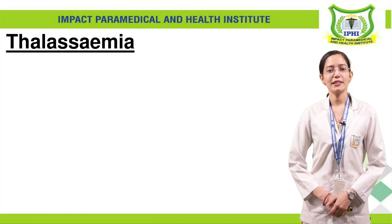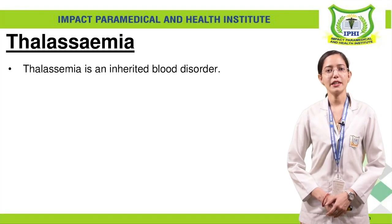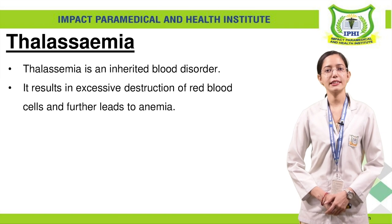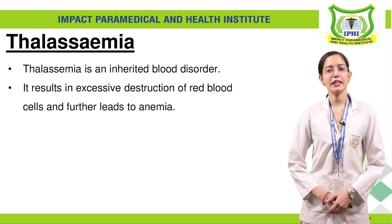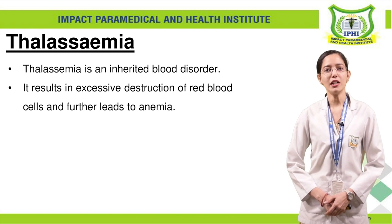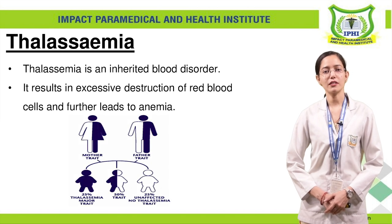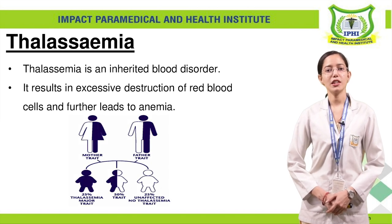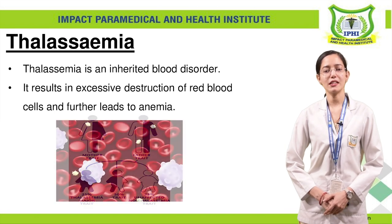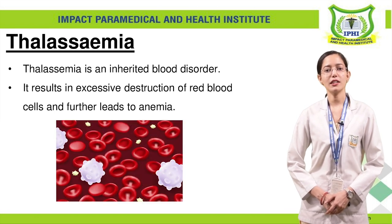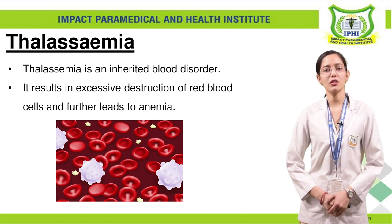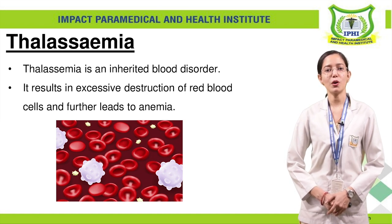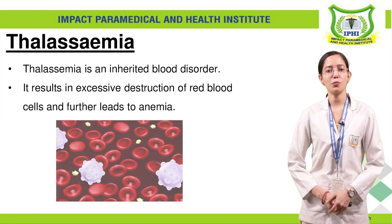What is thalassemia? Thalassemia is an inherited blood disorder. It results in excessive destruction of red blood cells and it can further lead to anemia. Thalassemia is a disease which can be passed from our parents. This happens when the destruction of blood cells in our blood is more than normal, which we call anemia.